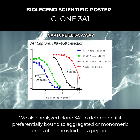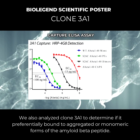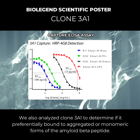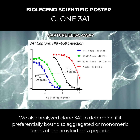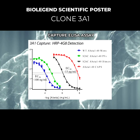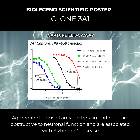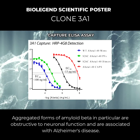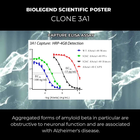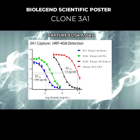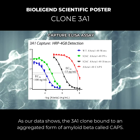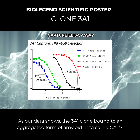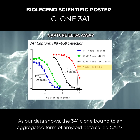We also analyzed clone 3A1 to determine if it preferentially bound to aggregated or monomeric forms of the amyloid beta peptide. Aggregated forms of amyloid beta in particular are obstructive to neuronal function and are associated with Alzheimer's disease. As our data shows, the 3A1 clone bound to an aggregated form of amyloid beta called CAPS.